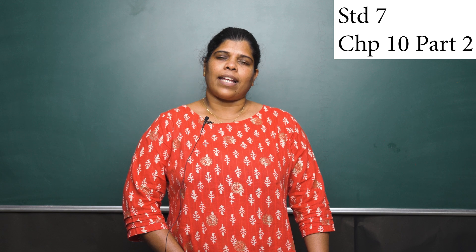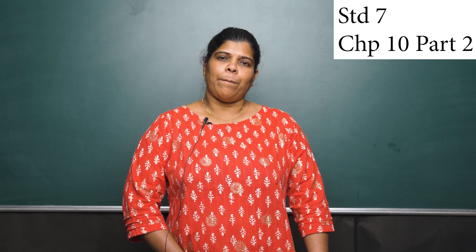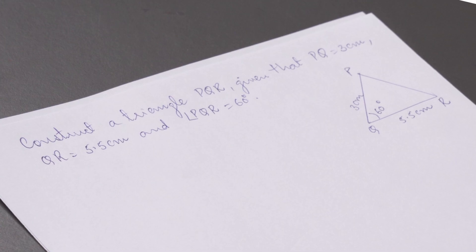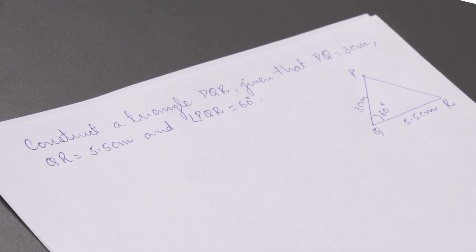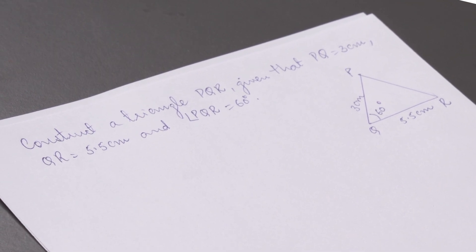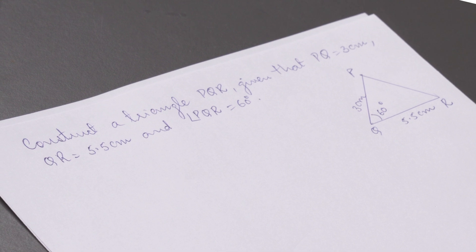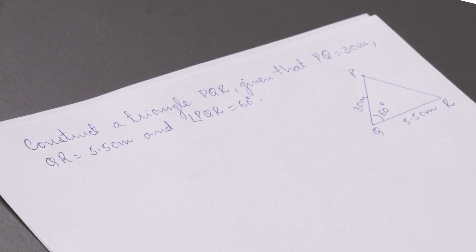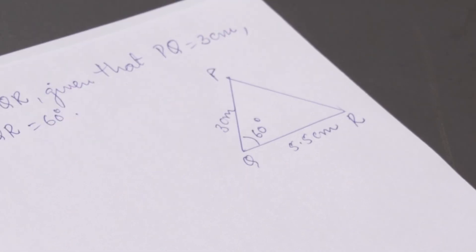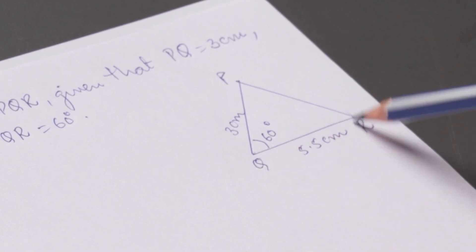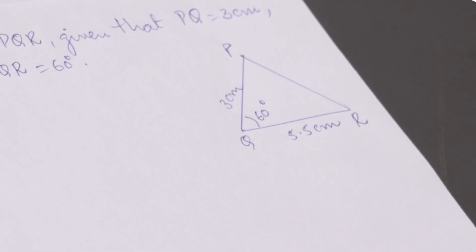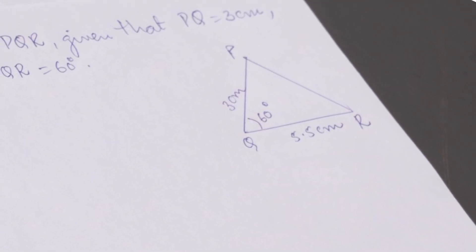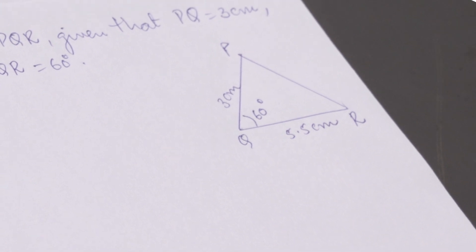Let us take an example. Construct a triangle PQR given that PQ is equal to 3 cm, QR is equal to 5.5 cm, and angle PQR is equal to 60 degrees.